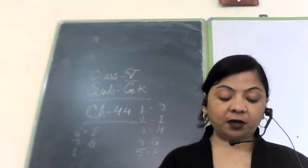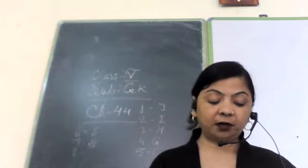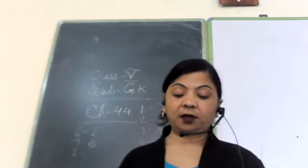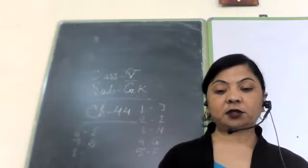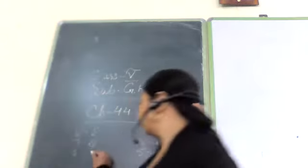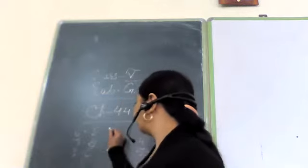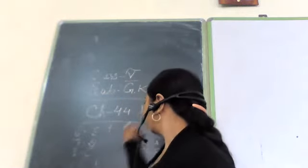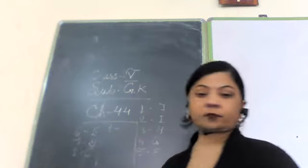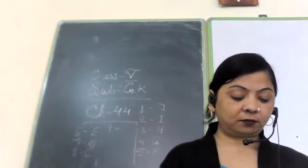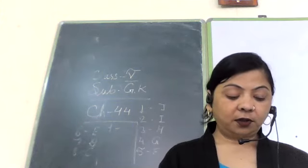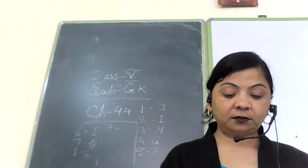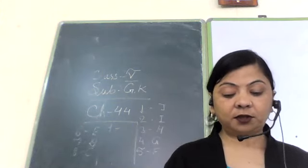Next, electromagnet. Electromagnet, eight, the answer is C, William Struggan. Eight, electromagnet, C, William Struggan.